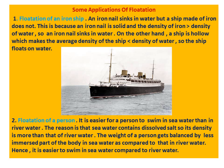Application two — floatation of a person: it is easier for a person to swim in sea water than in river water. Sea water contains dissolved salt, so its density is more than that of river water. The weight of a person gets balanced by less immersed part of the body in sea water compared to river water, hence it is easier to swim in sea water.